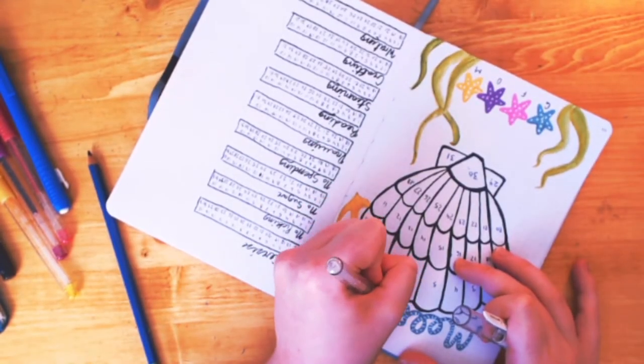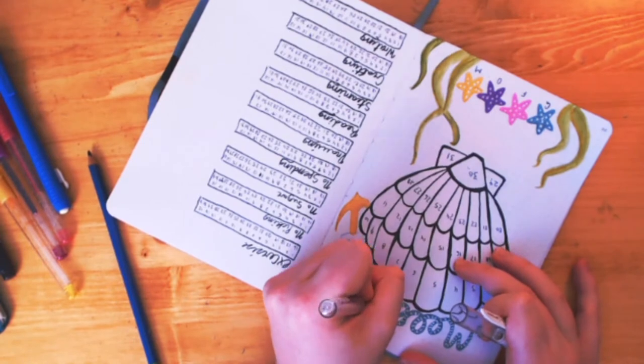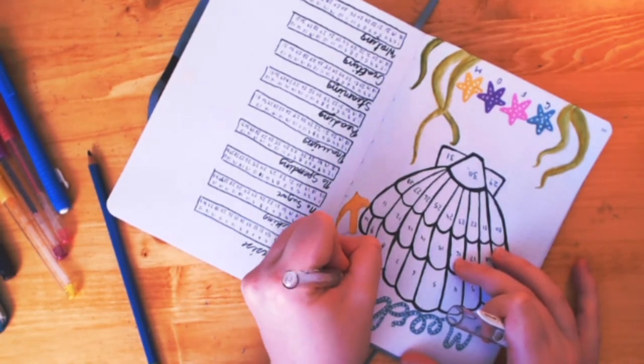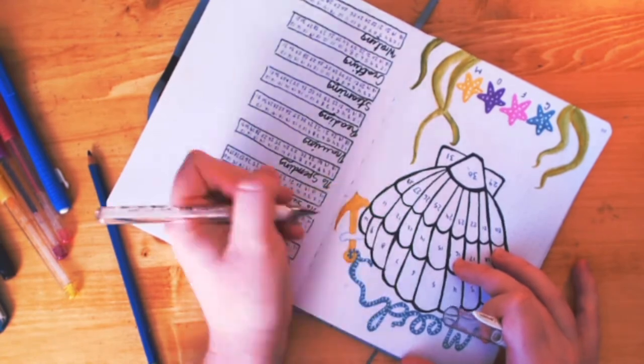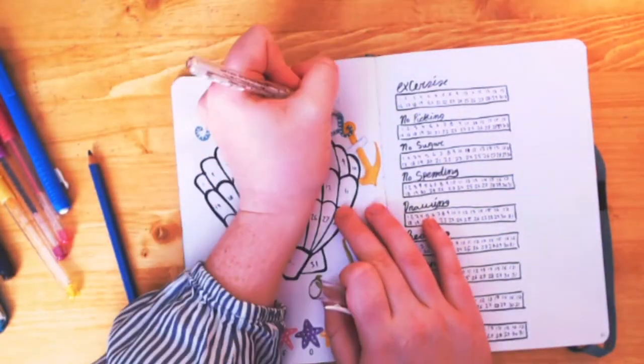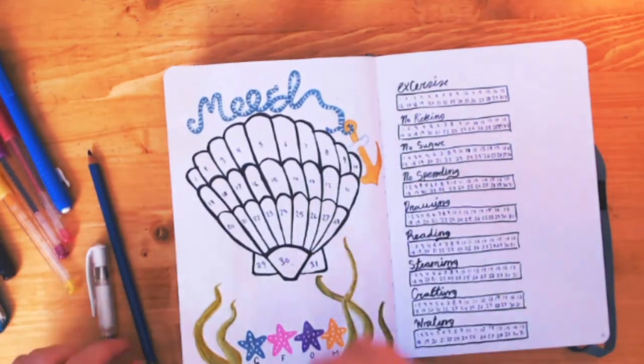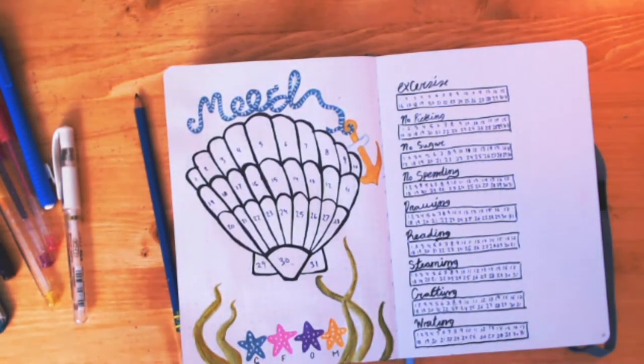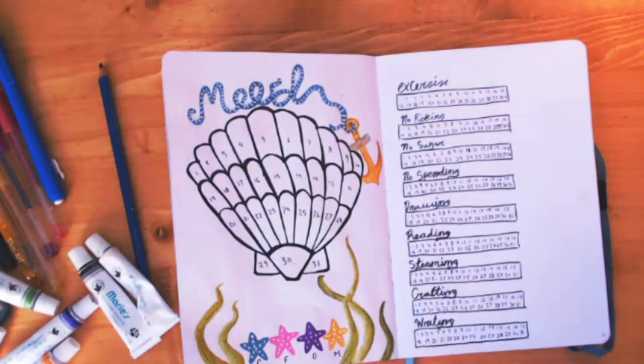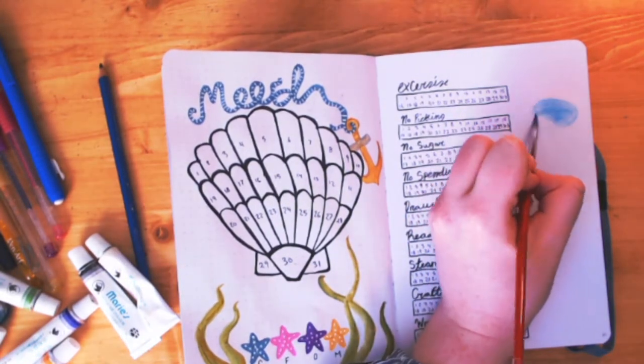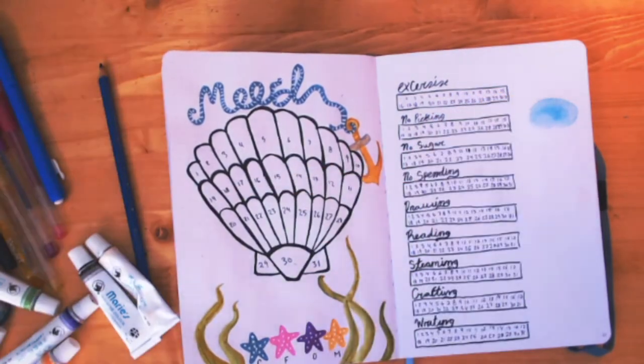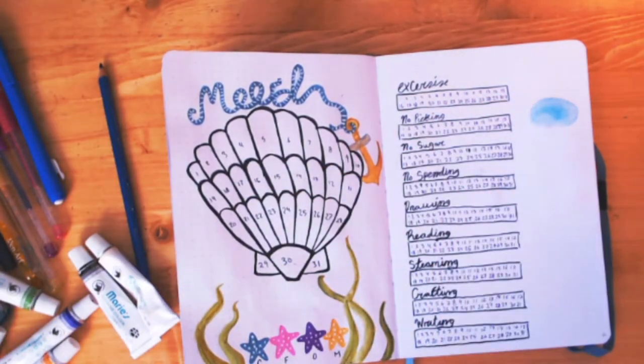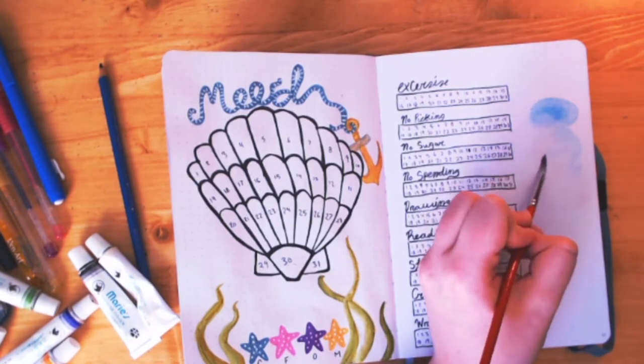I went in with my gel pen again and did the little lines on my lettering in order to give it the rope roundness. And then I went in and finished the anchor and just added a little bit more detail to it and gave it a little wood grain on the handle.